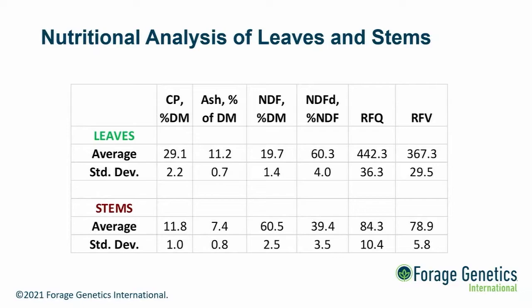What we found was very similar to what Dr. Undersander had found: a big difference in crude protein between leaves and stems — about 30% in leaves versus about 12% in stems — and a very large difference in NDF content, about 60% in stems versus about 20% in leaves. This is promising because big differences allow a greater opportunity to build prediction equations. There was a lesser but notable difference in ash content, with ash higher in leaves than in stems. NDF digestibility was greater for leaves than stems as anticipated, but the difference wasn't nearly as large as I expected.